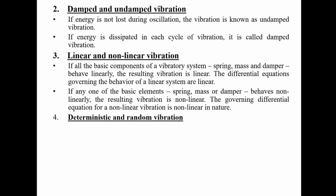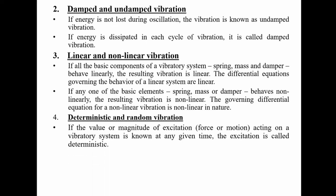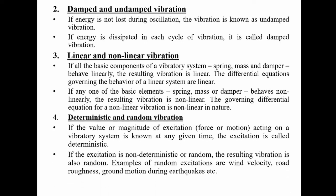The fourth classification is deterministic and random vibration. If the value or magnitude of excitation acting on a vibratory system is known at any given time, the excitation is known as deterministic. If the excitation is non-deterministic or random, the resulting vibration is also random. Examples of random vibration include excitation due to wind velocity, road roughness, and ground motion during earthquakes, where the force magnitude and direction cannot be predicted.